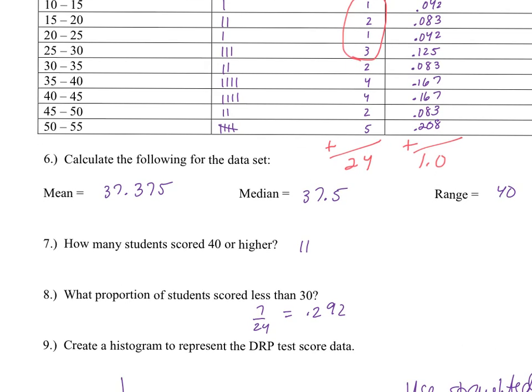The last question asks you to create a histogram. Remember, when making a histogram, things to look for are: number 1, the bars are touching, and number 2, your x-axis is labeled like a number line. For example, it should look like 10, 15, 20, 25, as opposed to writing 10 to 15, 15 to 20, and so on. Create your histogram, then unpause the video and check your graph.